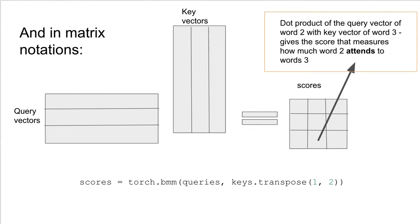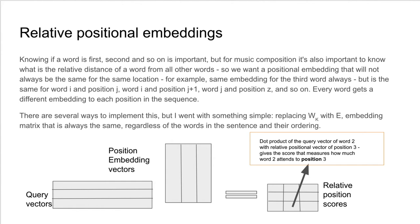Here you can see the matrix multiplication itself in matrix notation, and the code for it. The most important takeaway is that in the result, the dot product of the query vector of word, for example, 2, with key vector of, for example, word 3, gives the score that measures how much word 2 attends to word 3.